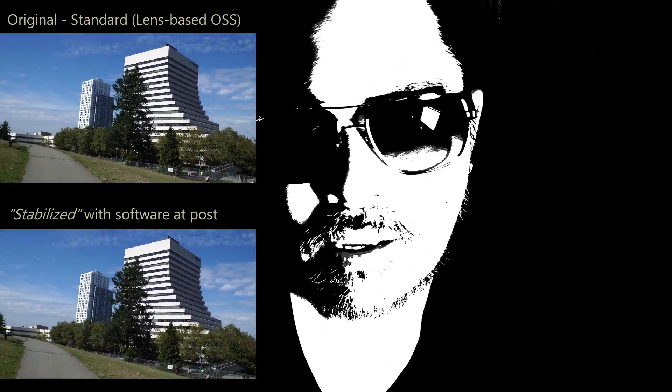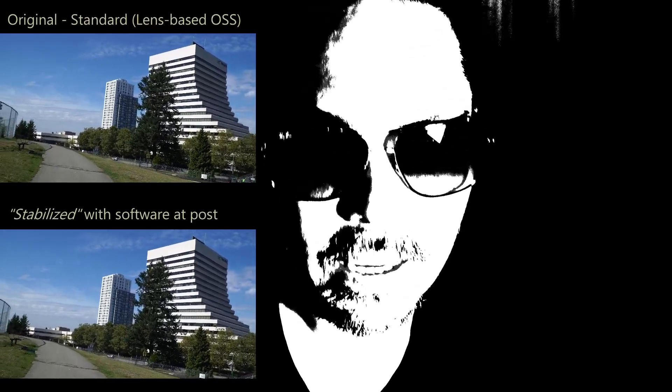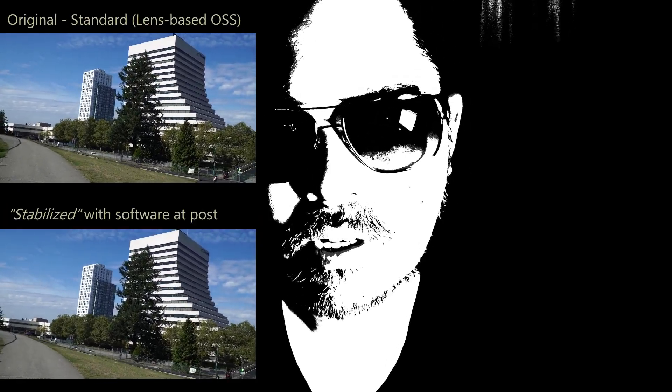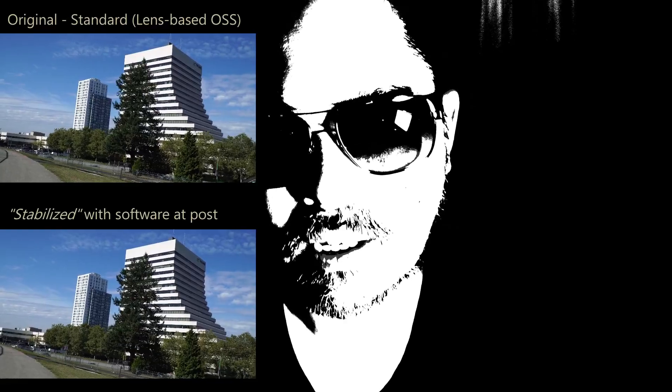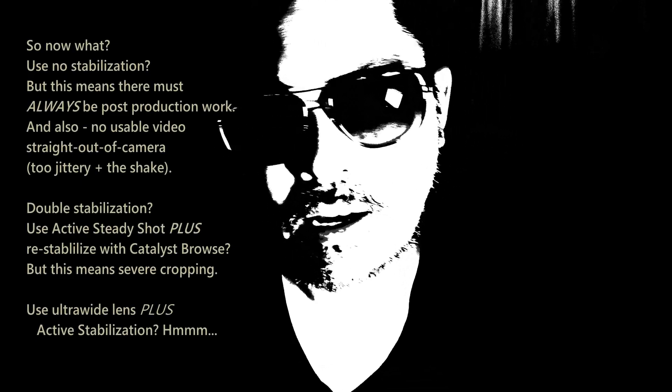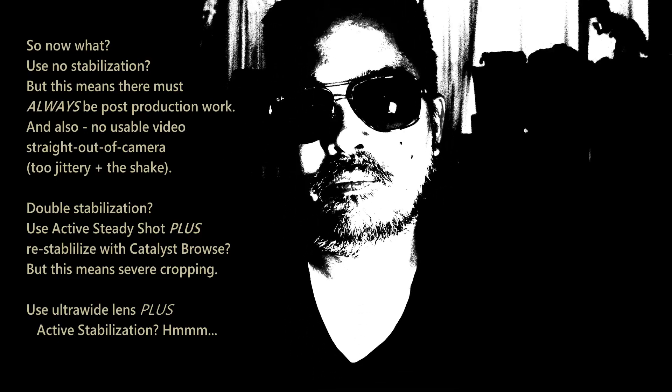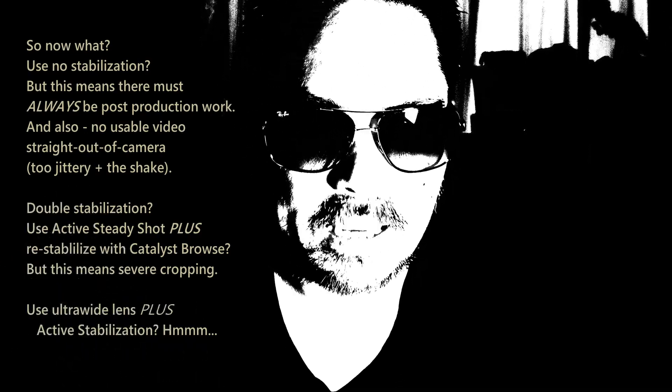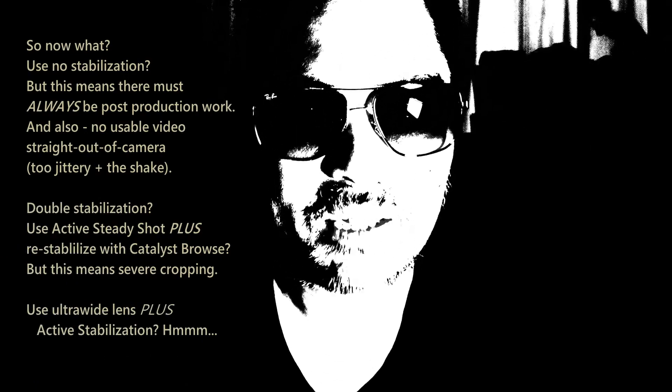Ironically, if you use Active stabilization — which already has quite a bit of cropping applied — you can further stabilize that using Catalyst Browse, with a penalty of additional cropping. So it doesn't add up. Otherwise the option is to use purely unstabilized footage, which is completely unusable straight out of camera, or to stabilize footage that's already been stabilized by Active Steady Shot. Any suggestions, please leave them in the comments. That's a wrap for now, till next time.